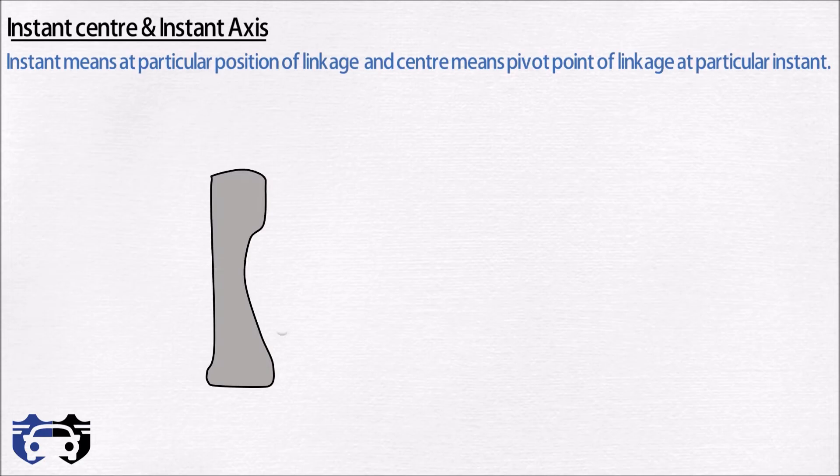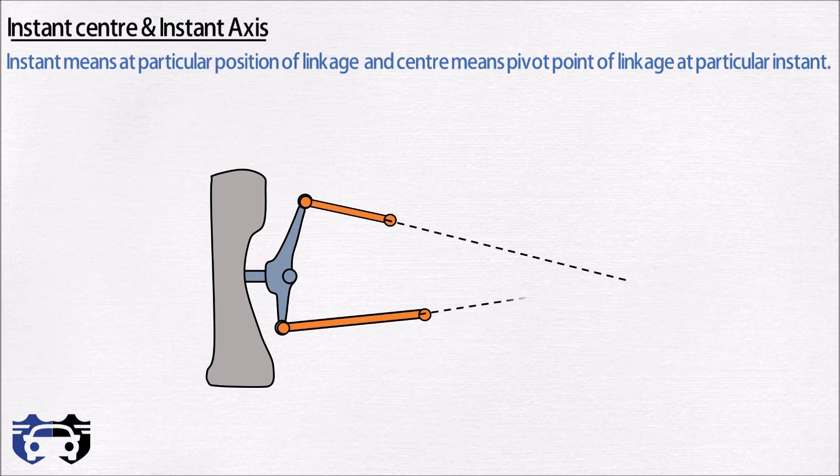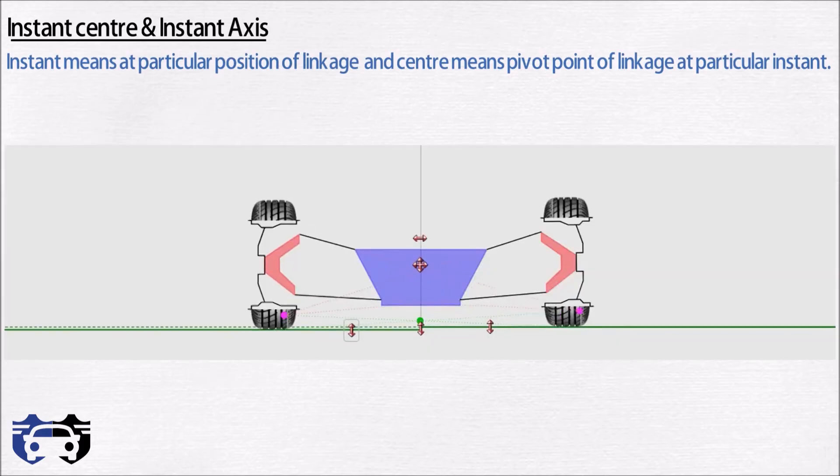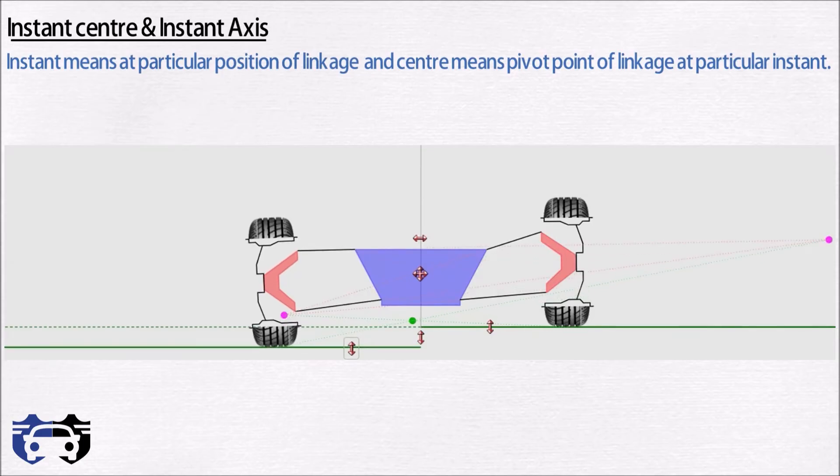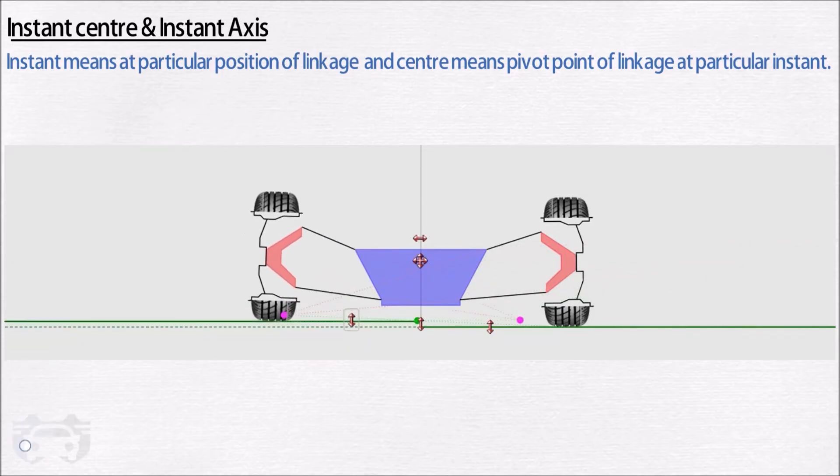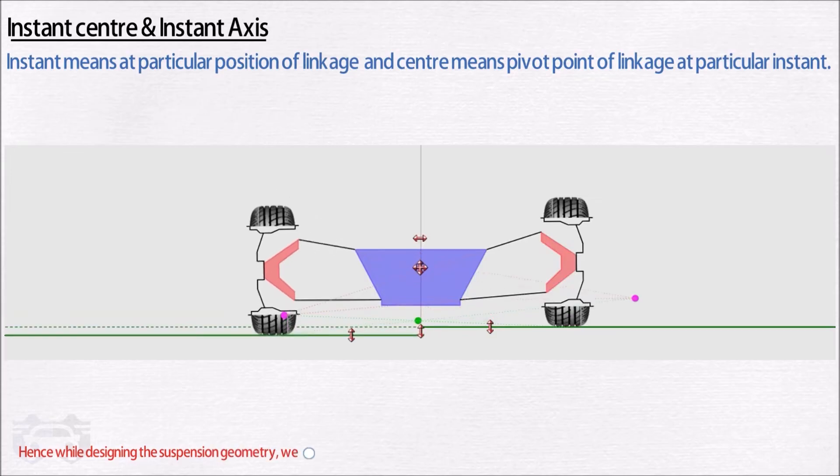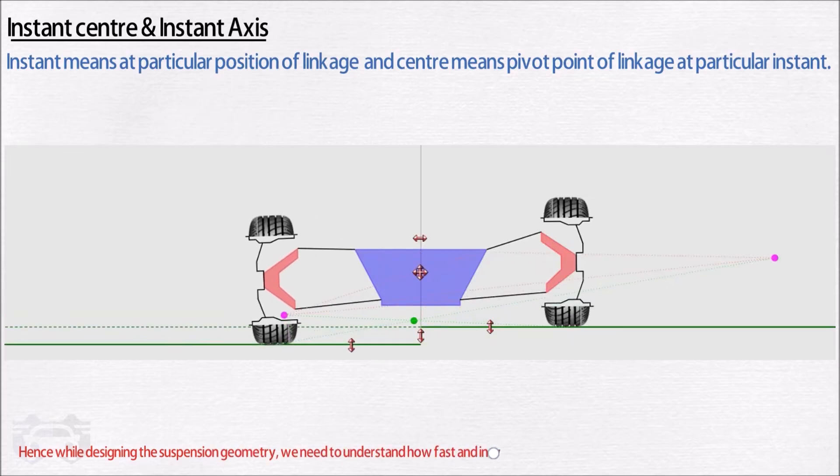Now let's see what is instant center and instant axis. As the name suggests, instant means at a particular position of linkage, and center means the pivot point of linkage at that particular instant. Here you can see we are having the front view of double wishbone geometry, and if we extend the upper and lower A-arm then we will get a pivot point about which the linkages will move at that particular instant. This pivot point is called the instant center. So when the tire moves up and down it leads to deflection of linkages which will effectively change the instant center. Hence while designing the suspension geometry we need to understand how fast and in what direction the instant center changes with the suspension travel.